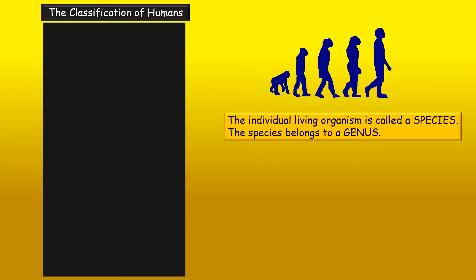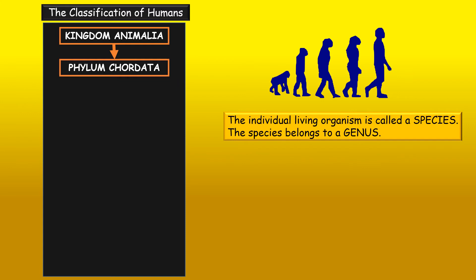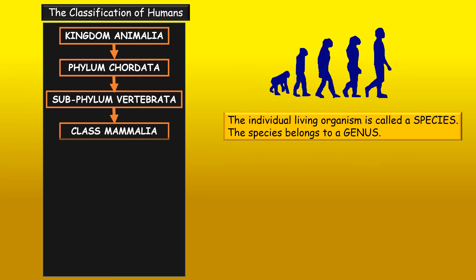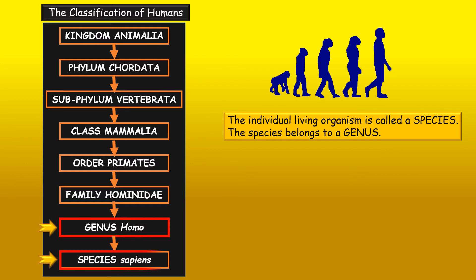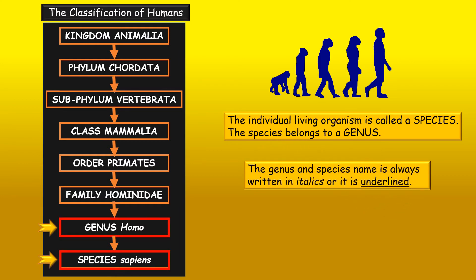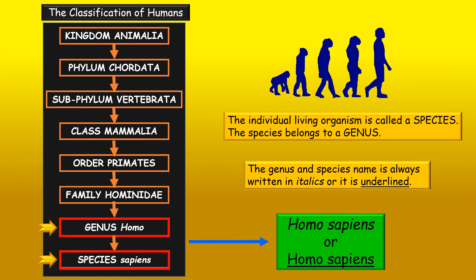This hierarchy shows the scientific classification for humans. Kingdom Animalia, Phylum Chordata, Subphylum Vertebrata, Class Mammalia, Order Primates, Family Hominidae, Genus Homo, Species Sapiens. You can see that humans belong to the genus Homo and the species sapiens. The genus and species are always written either in italics or underlined, as shown here.